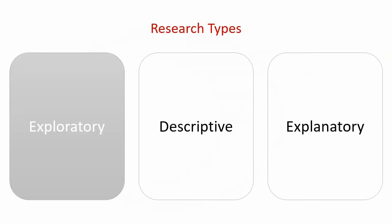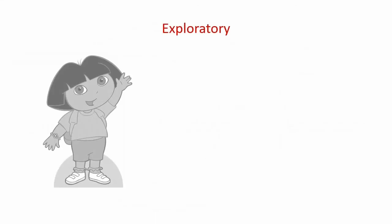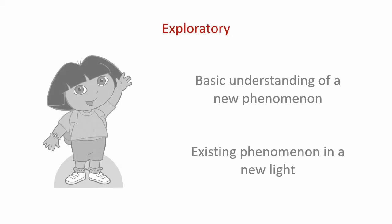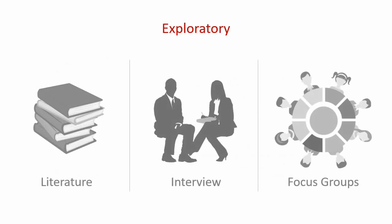Let's start with exploratory. For this type of research, think of yourself as Dora the Explorer — as in you are exploring a phenomenon. All you want to do is to get a basic understanding of a new phenomenon, or you want to see an existing phenomenon in a new light. In an exploratory study, we are not interested in definitively defining every aspect of the phenomenon; that could take decades to achieve. The aim of research is to contribute to knowledge, but this contribution is done bit by bit, and this starts with exploratory research. There are three main ways we can figure out the basics: searching for literature, interviewing experts on the subject, and/or conducting focus group discussions.